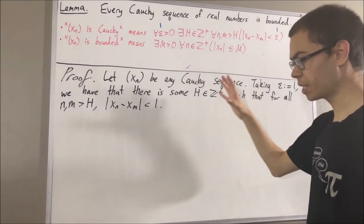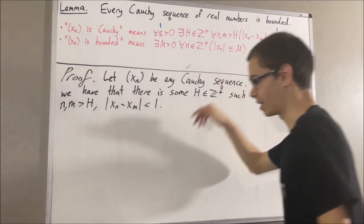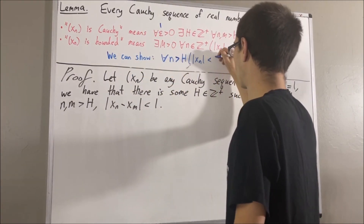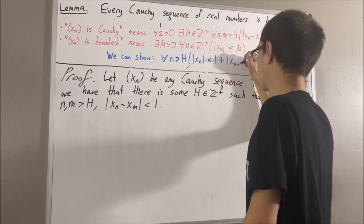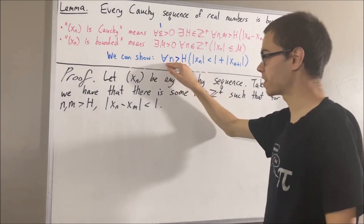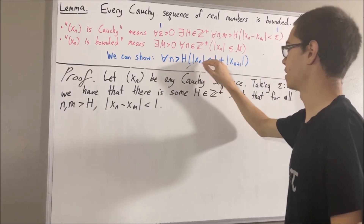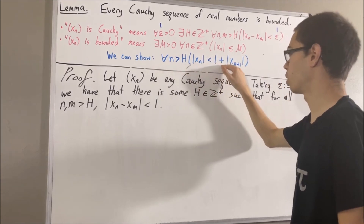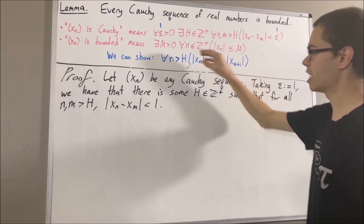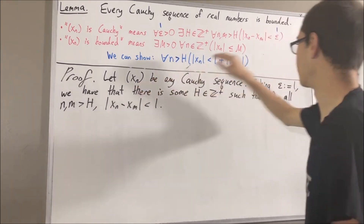Now to proceed further with our proof, we are going to prove the following claim: for all positive integers n greater than h, the absolute value of xn is less than 1 plus the absolute value of x_{h+1}. And proving this will help us prove that xn is bounded.